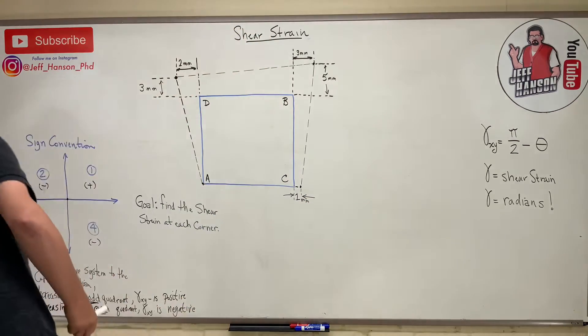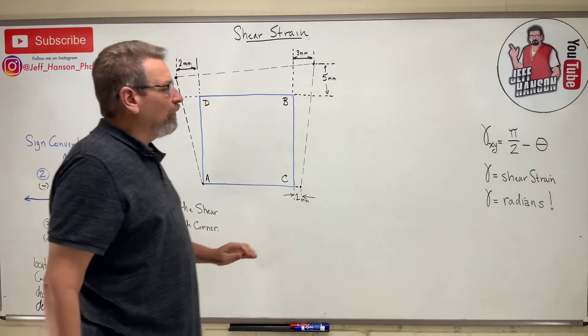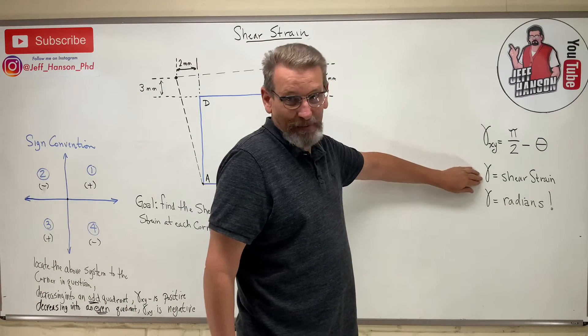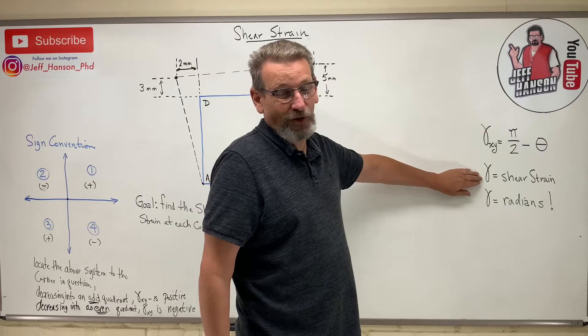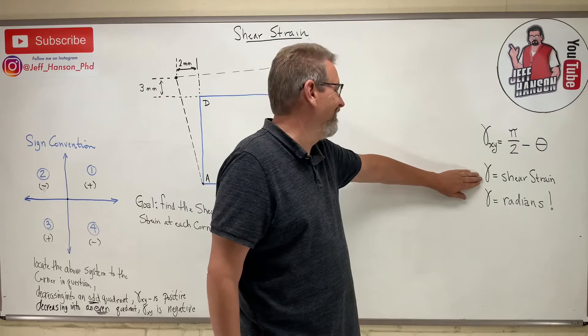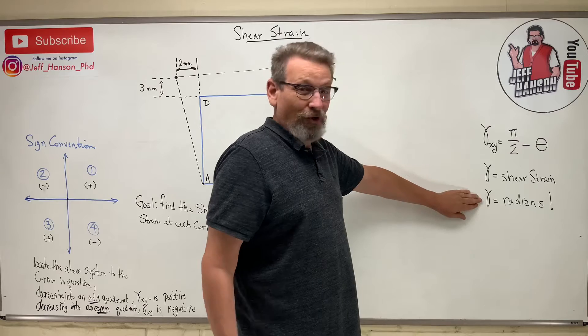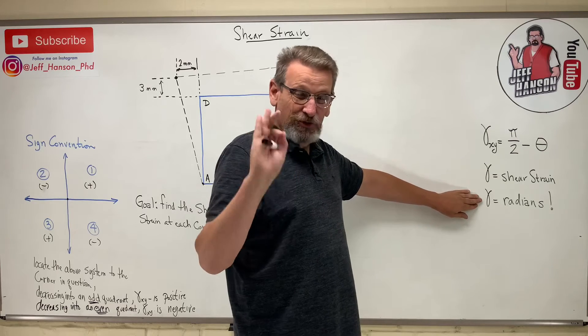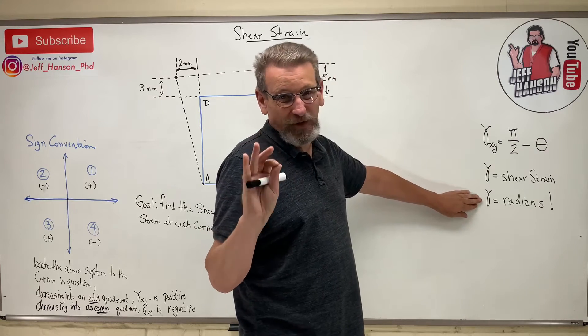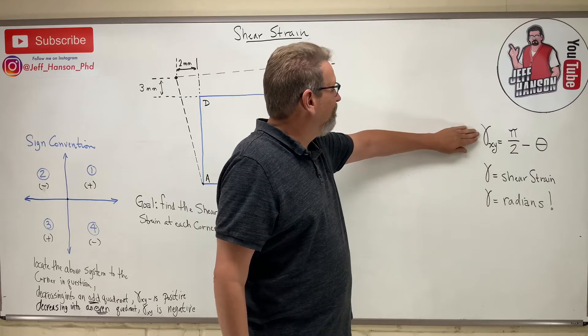So shear strain is given by the Greek letter gamma, which my students call dead fish. And so it's also in radians. Shear strain is always a number in radians. So it's going to be a really little number.